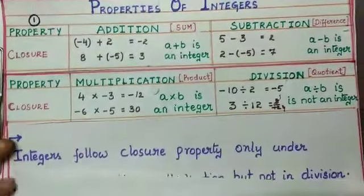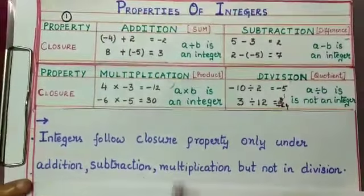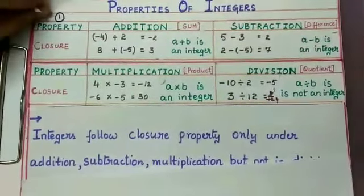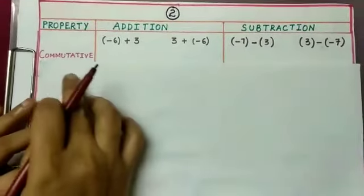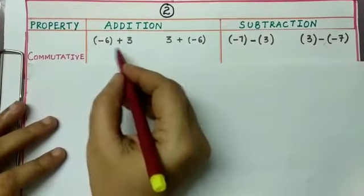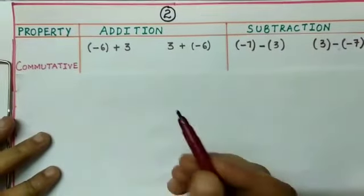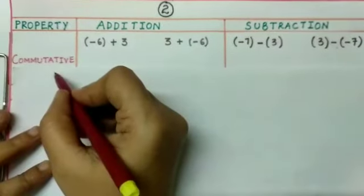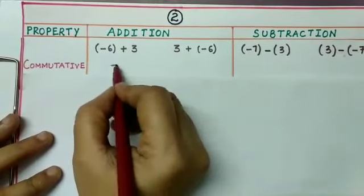We can conclude that integers follow closure property only under addition, subtraction, and multiplication, but not under division. Now the second property is the commutative property. If you take two integers and add, subtract, multiply, or divide them in any order and get the same result, then integers follow commutative property. Let us check under addition: minus 6 plus 3 equals minus 3.